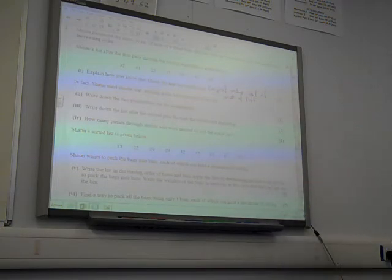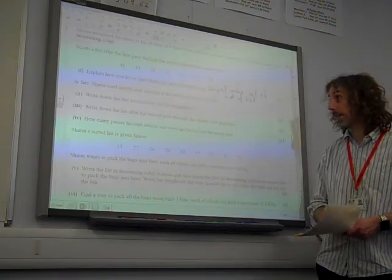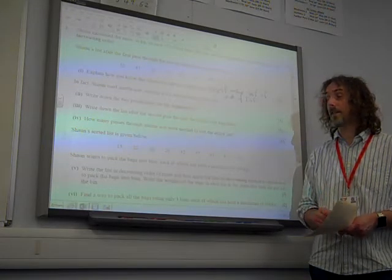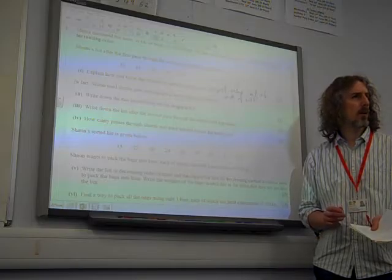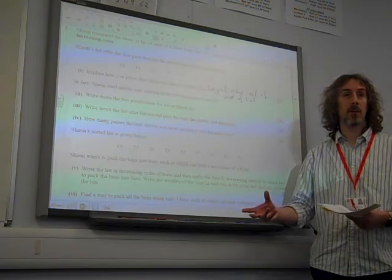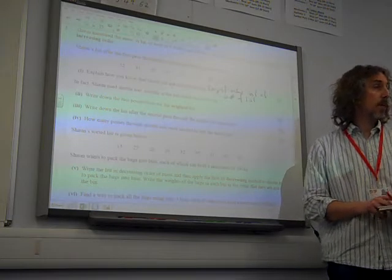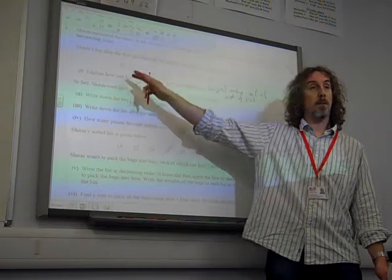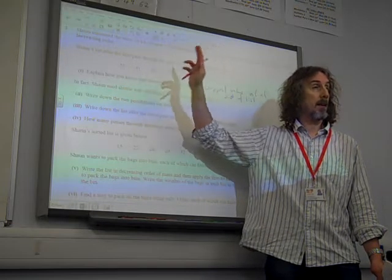Part two. In fact, Sean used the shuttle sort. Yes, of course he did. Start at the left-hand end of the list. Write down the two possibilities for the original list. So again, we're thinking, what did the first pass of the shuttle sort do? The first pass of the shuttle sort looks at the first and second items and swaps them if necessary. And that's the end of the pass.